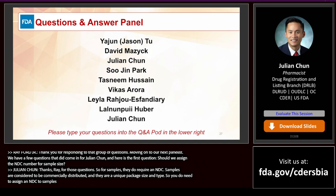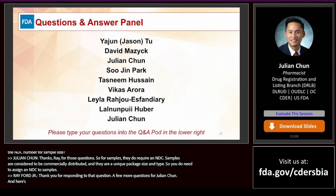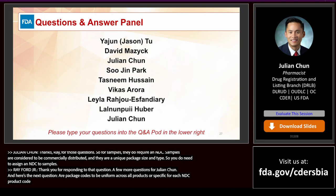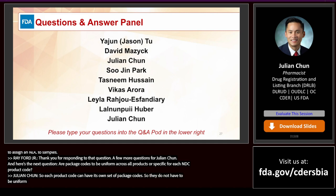Question: Are package codes to be uniform across all products or specific for each NDC product code? Each product code can have its own set of package codes — they do not have to be uniform across all products. Each product code can have its own package code designations.